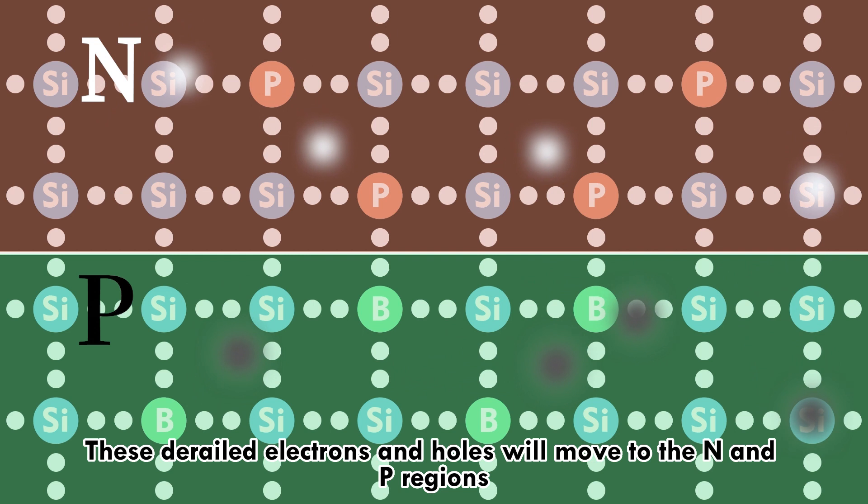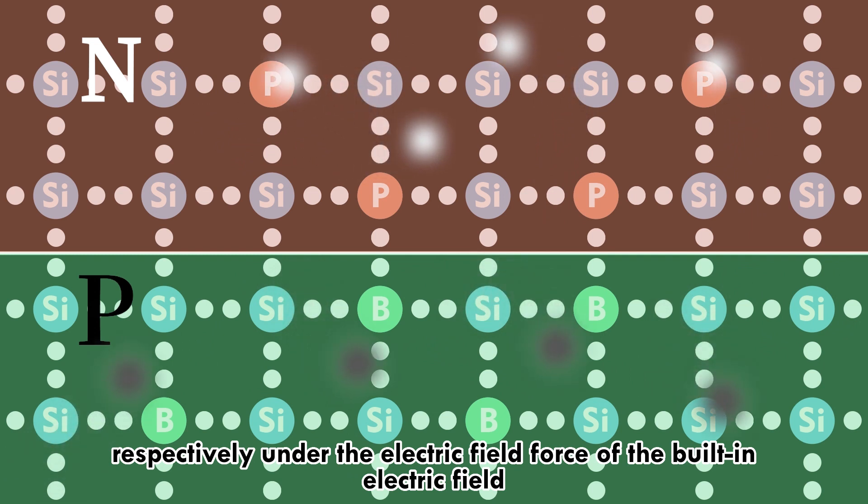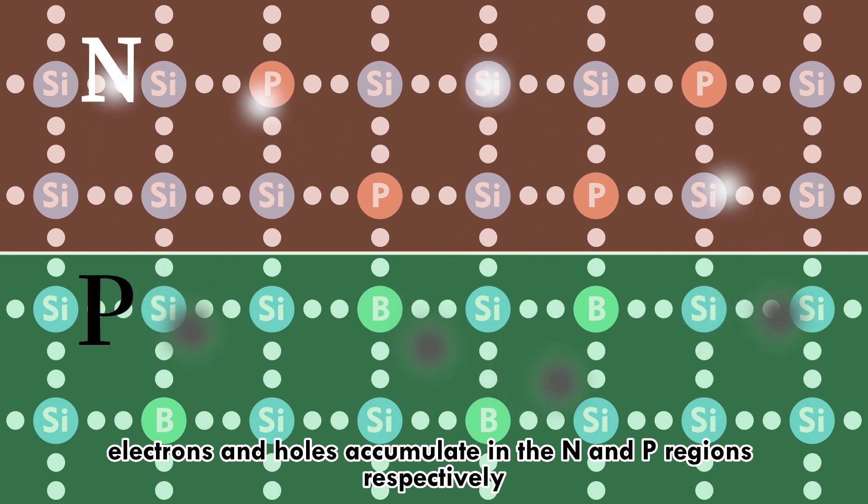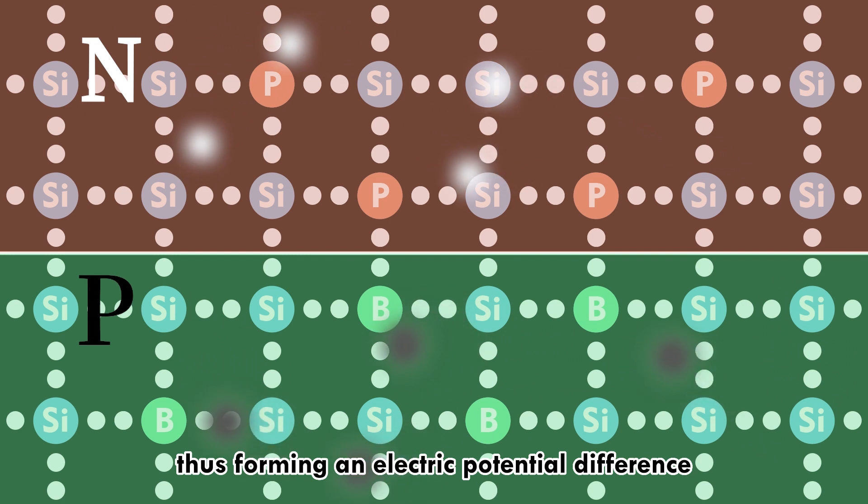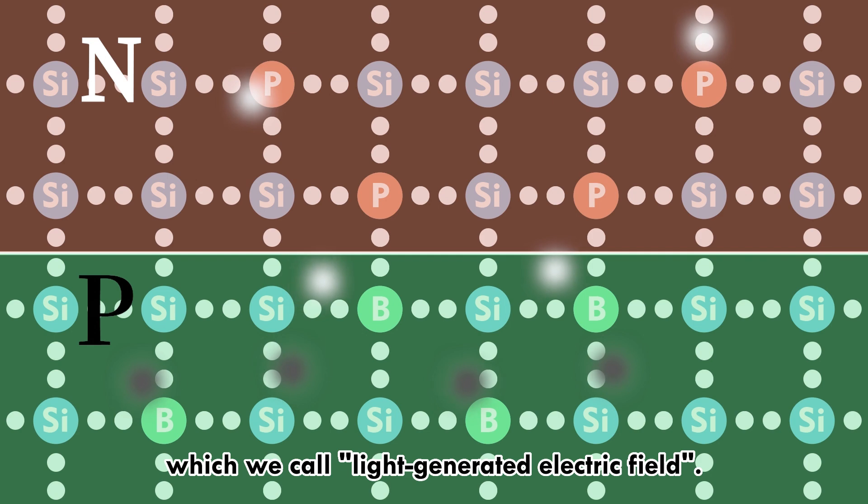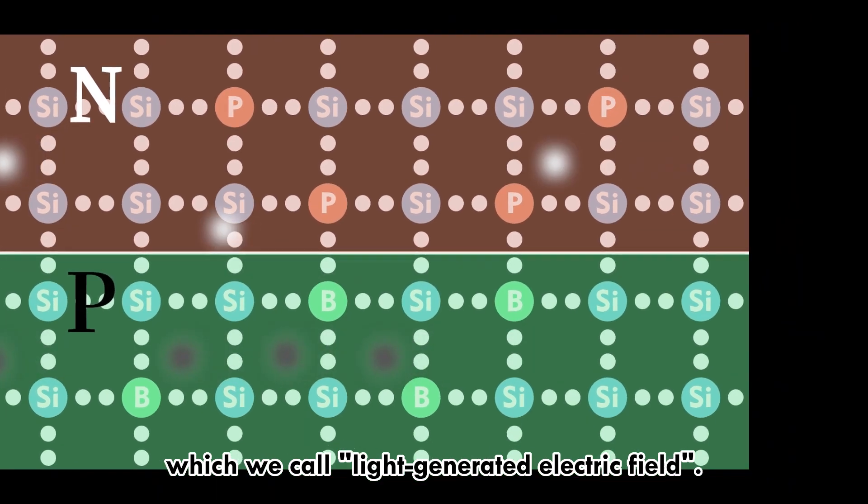These electrons and holes move to the n and p regions, respectively, under the force of the built-in electric field. Under continuous irradiation of sunlight, electrons and holes accumulate in the n and p regions, respectively, forming an electric potential difference. This makes the n region negatively charged and the p region positively charged, which we call the light-generated electric field.